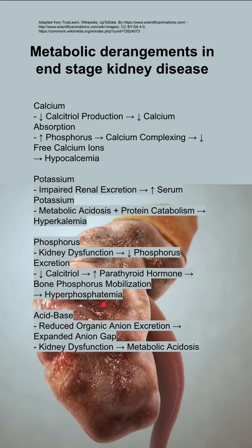For acid-base irregularities, you have reduced organic anion excretion, leading to an expanded anion gap. Kidney dysfunction can lead to metabolic acidosis.